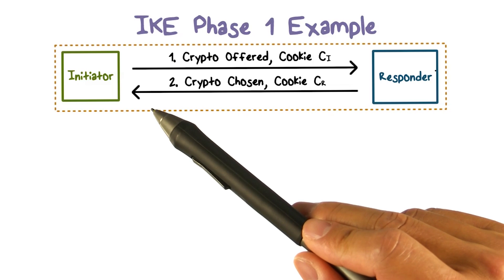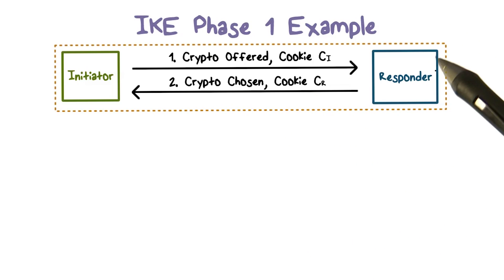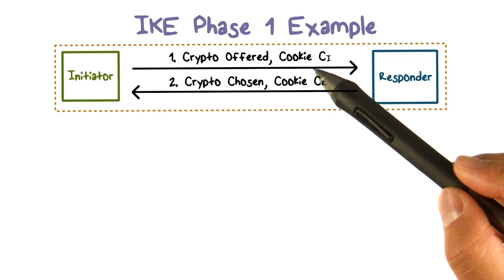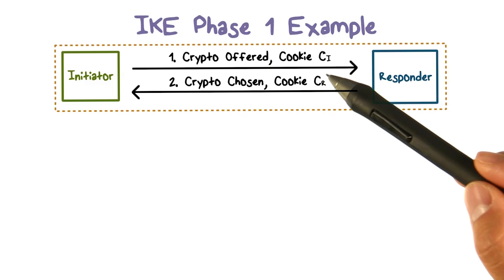Here's how it works. First, the initiator sends to the responder the crypto that it proposes to use along with the cookie.